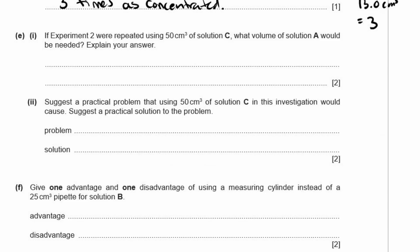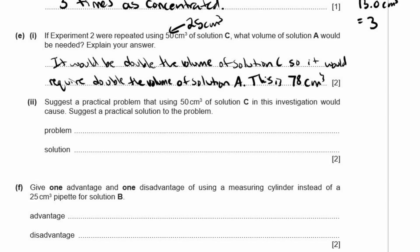E1. If experiment 2 were repeated using 50 centimeters cubed of solution C, what volume of solution A would be needed? And explain your answer. Okay. Because remember, it started off with 25 centimeters cubed. Okay. Now you're changing it to 50 centimeters cubed. So if you double the volume of the iron sulfate, you will need double the volume of the potassium manganate. It would be double the volume of solution C. So it would require double the volume of solution A. This is 78 centimeters cubed. You've explained it and you've given the value that it should be.